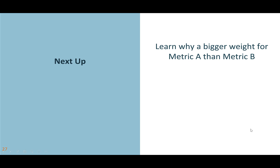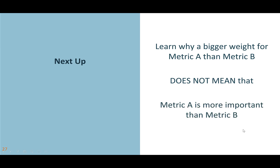We know this approach is used heavily, and normalization and weighting are at the center of it. One of the biggest misuses of multi-attribute value theory is to assume that if metric A has a bigger weight than metric B, then metric A is more important than metric B. Come back next time to learn why a bigger weight for metric A does not necessarily mean it is more important than metric B.